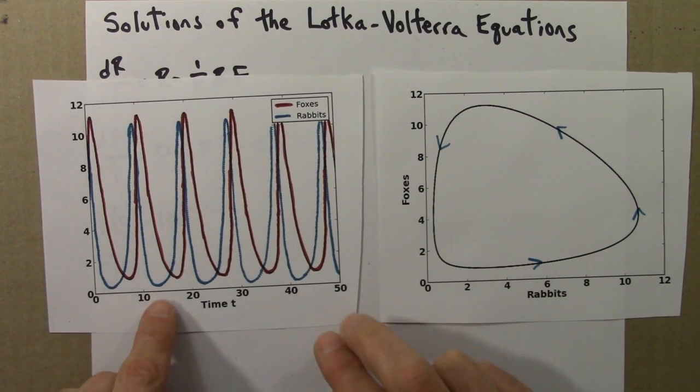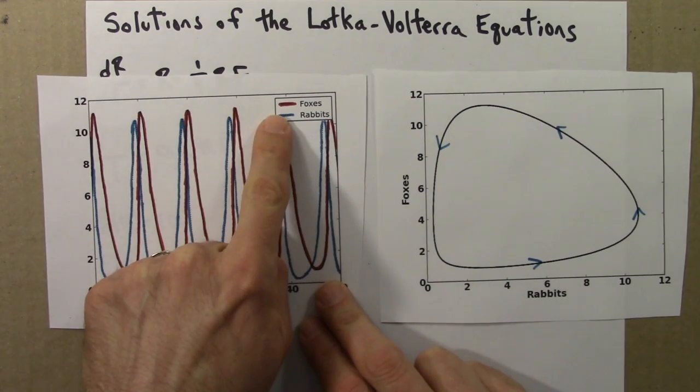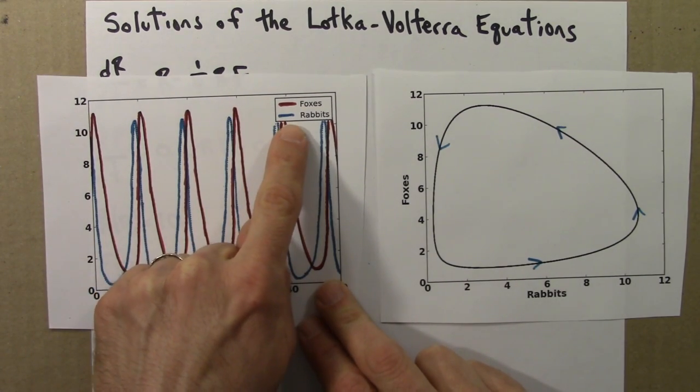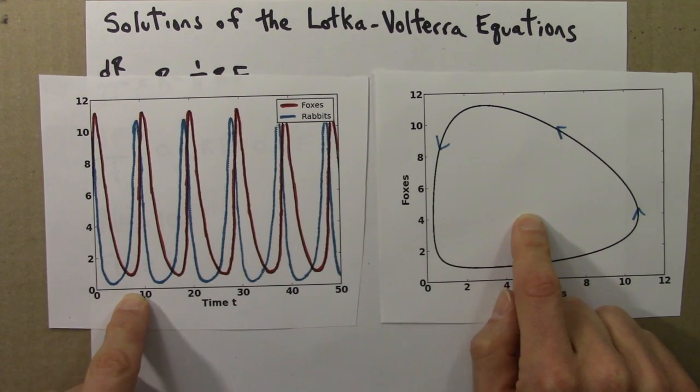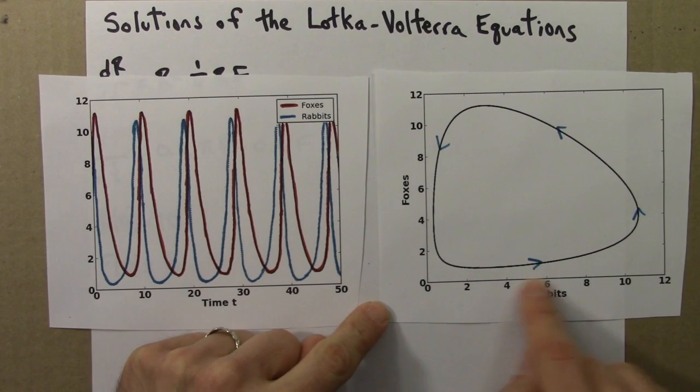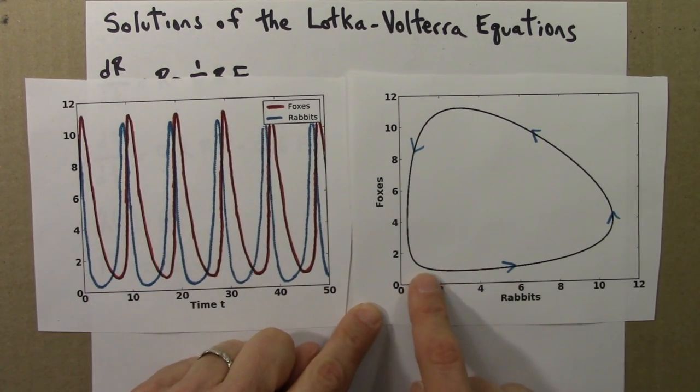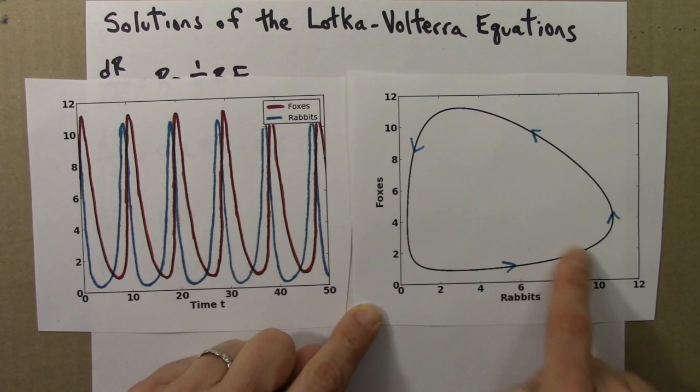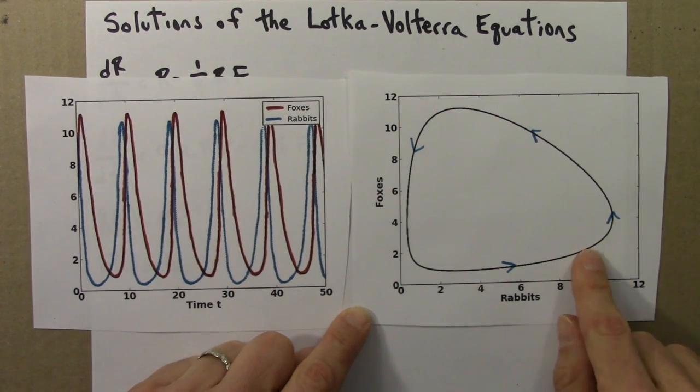So again, to summarize, we took two solution curves, F as a function of time and R for rabbits as a function of time, and we plotted them against each other. In so doing, we lose the time information, but we're able to see, I think much more clearly, how the rabbit and fox populations cycle together and how those cycles are related.